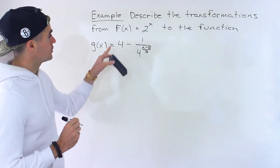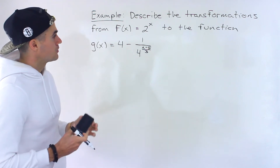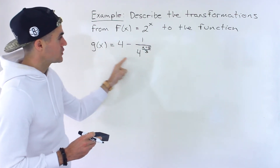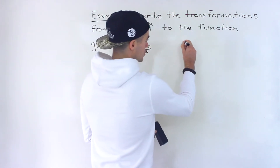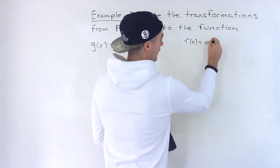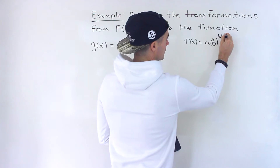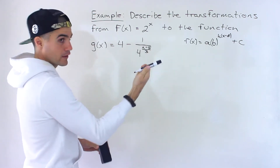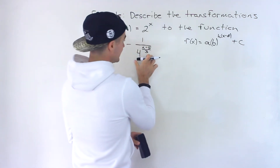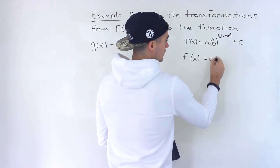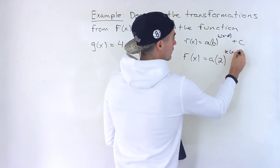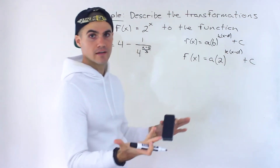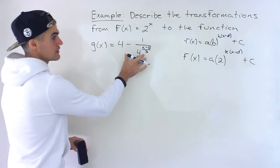So we have to go from the parent function to this transformed function. In order to get the transformations, we need the transformation values. What we need to do is take this function — the transformed function — and put it in the standard format of a transformed exponential function. In this case, we're given the parent function 2 to the power of x, so we're given the base. We need to convert it to get the a value, k value, d value, and c value, and then describe the transformations.